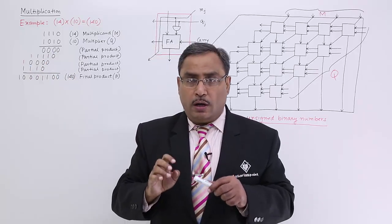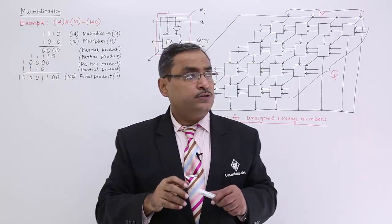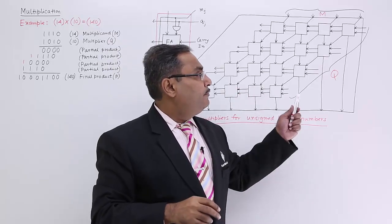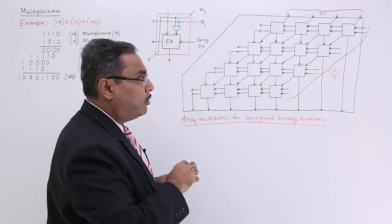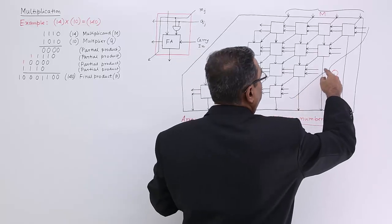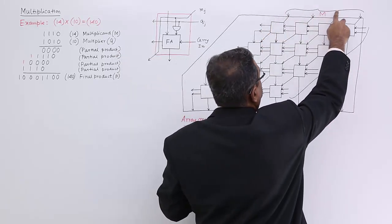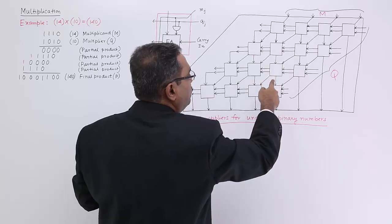That's why this block has been written here for 16 times, has been drawn here for 16 times. So here I will be passing the Q bits, here I will be passing the multiplicand bits and it will be working.